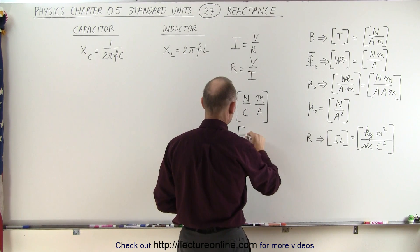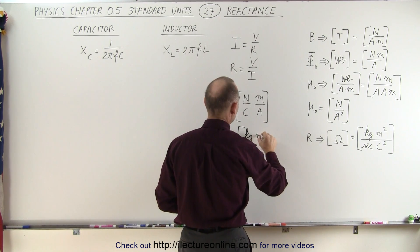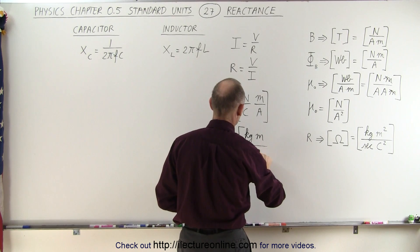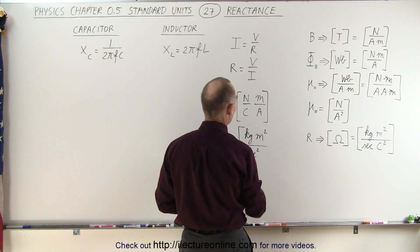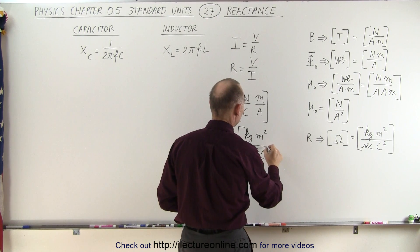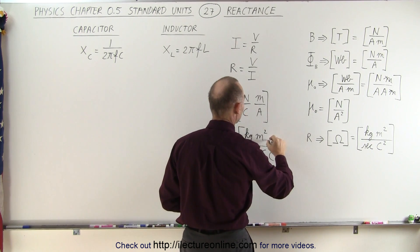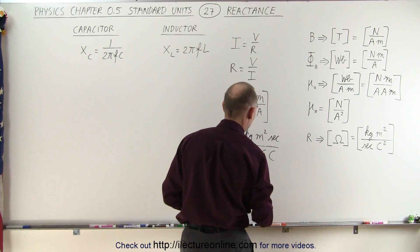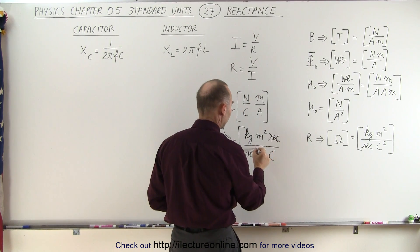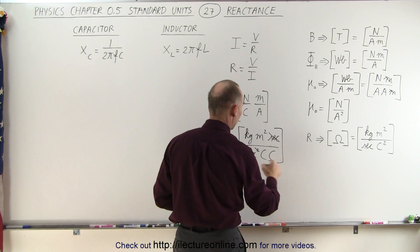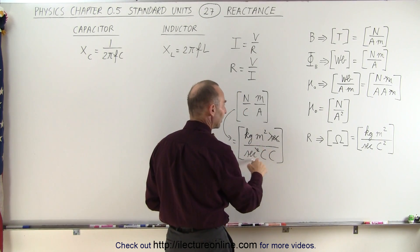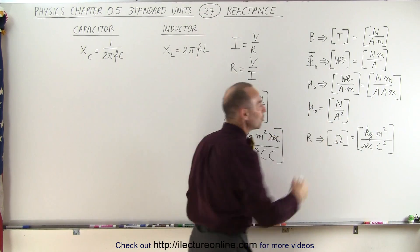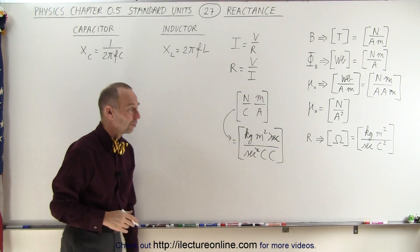Substituting, we get kilograms meters per second squared times meters — making that meters squared — with coulombs in the denominator. An amp is a coulomb per second, so coulomb per second means the second goes to the numerator, and this second cancels that second. We're left with coulomb squared, giving us kilograms meters squared per second per coulomb squared — indeed the units for ohms, the units of resistance.